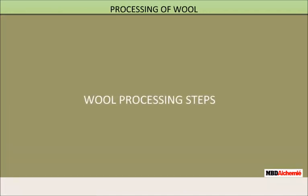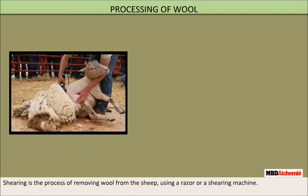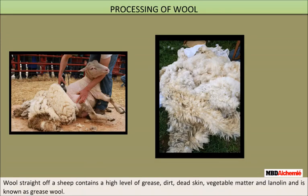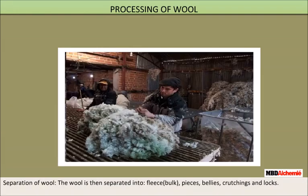Processing of wool consists of the following steps. Shearing is the process of removing wool from the sheep using a razor or a shearing machine. Wool straight off a sheep — known as grease wool — contains a high level of grease, dirt, dead skin, vegetable matter, and lanoline. The wool is then separated into fleece, bulk pieces, bellies, crutchings, and locks.